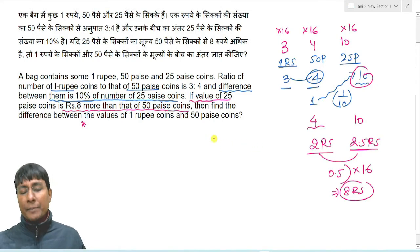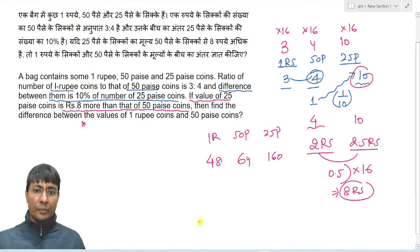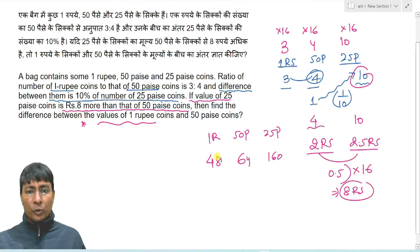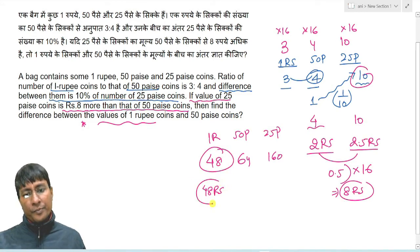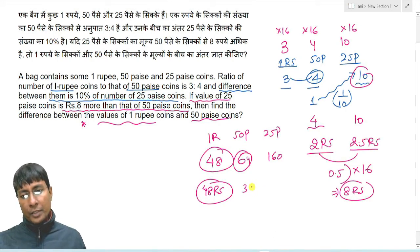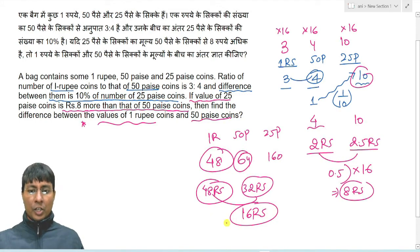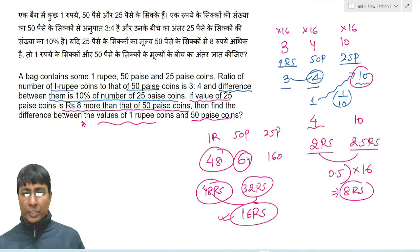After multiplying by 16, the exact numbers become: one rupee coins = 48, 50 paise coins = 64, and 25 paise coins = 160. The value of 50 paise coins is 64 × 0.5 = 32 rupees. The value of one rupee coins is 48 rupees. The difference between them is simply 16 rupees, which is our answer.